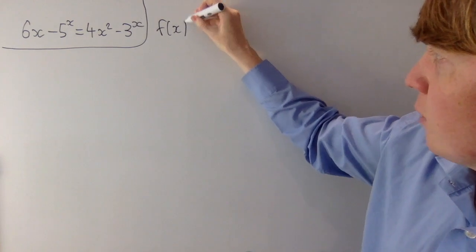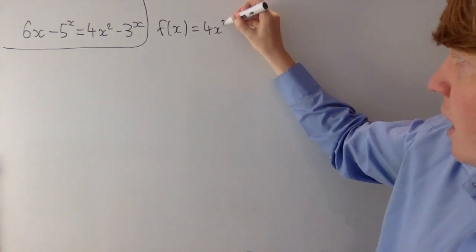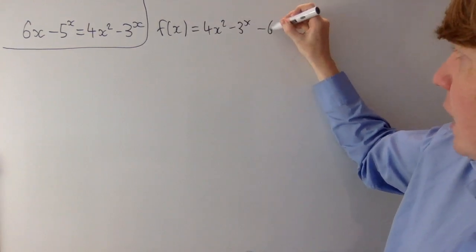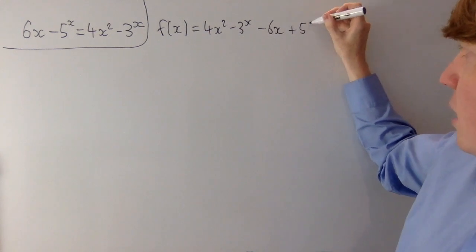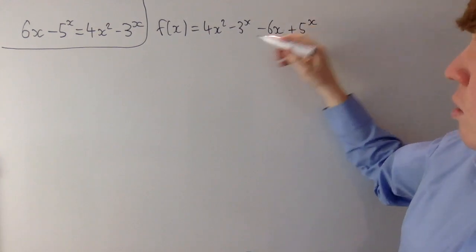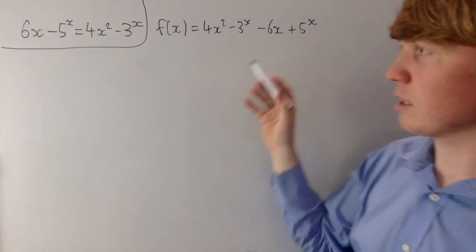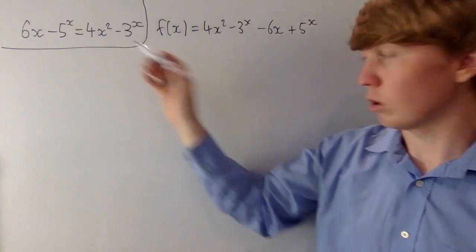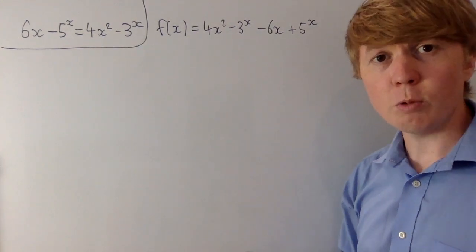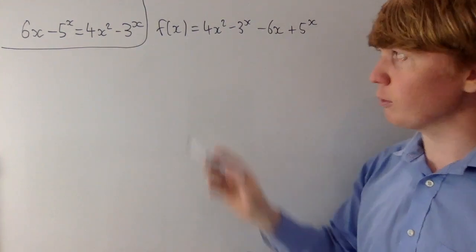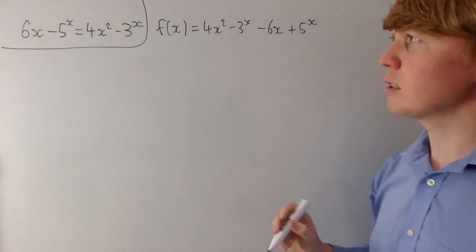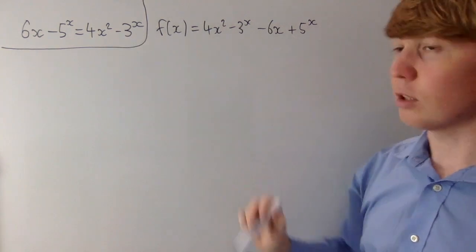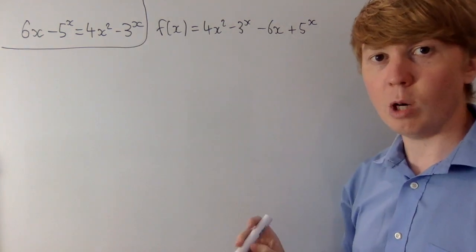So let's define f(x) as 4x squared minus 3 to the x minus 6x plus 5 to the x. So if you've got a value of x where f(x) is 0, this corresponds to a solution to our equation. And what we'll do is have a look at the graph of this function and its properties to tell us more about the roots, and hence the solutions of our equation.